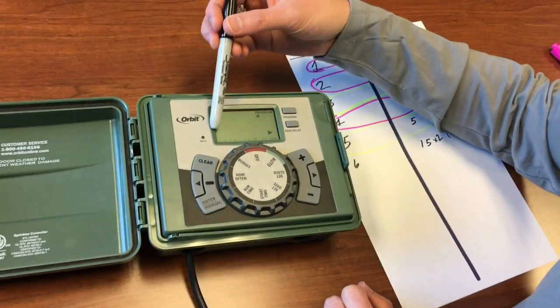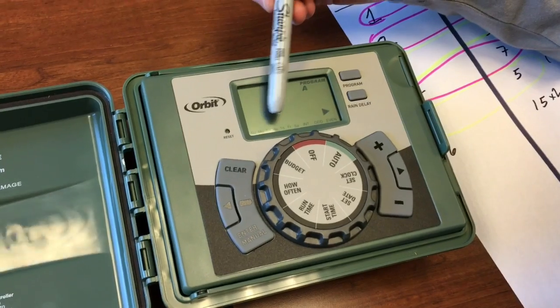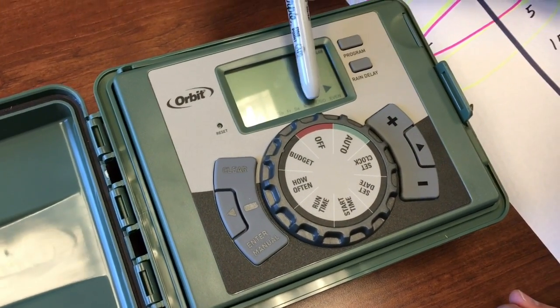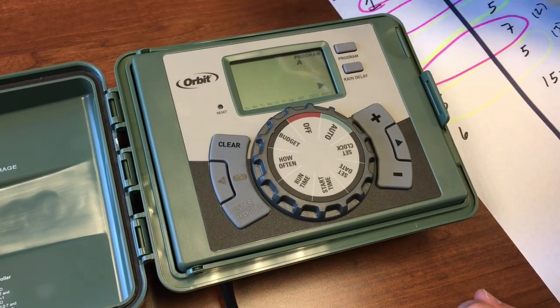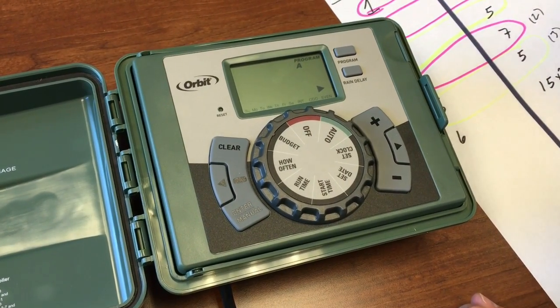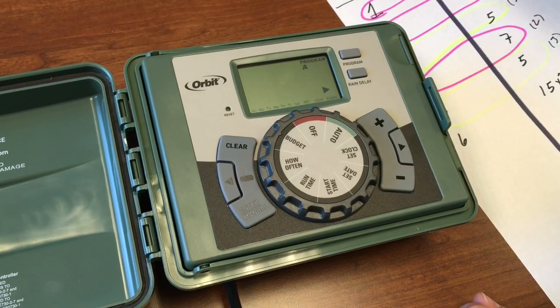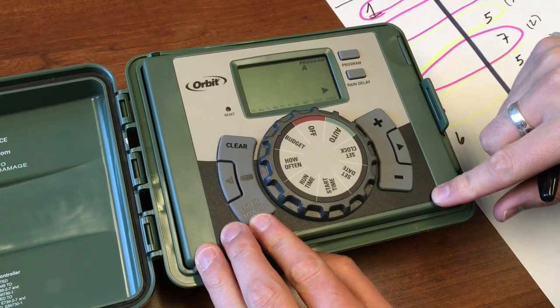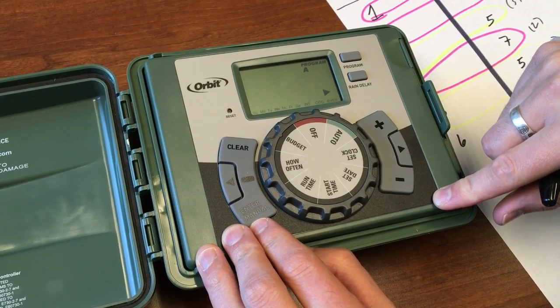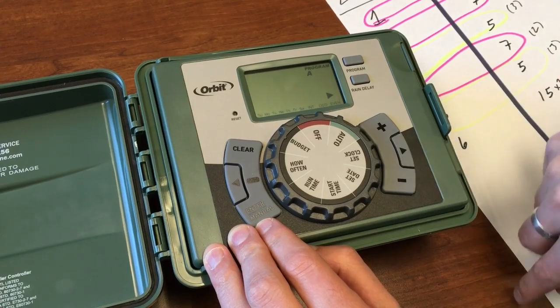If you look along the bottom you can see the different days of the week. There's also a marking that says INT which stands for interval, and then there's an odd and an even which is either odd number days of the week or even number days of the week. This one we're going to have it run every other day.